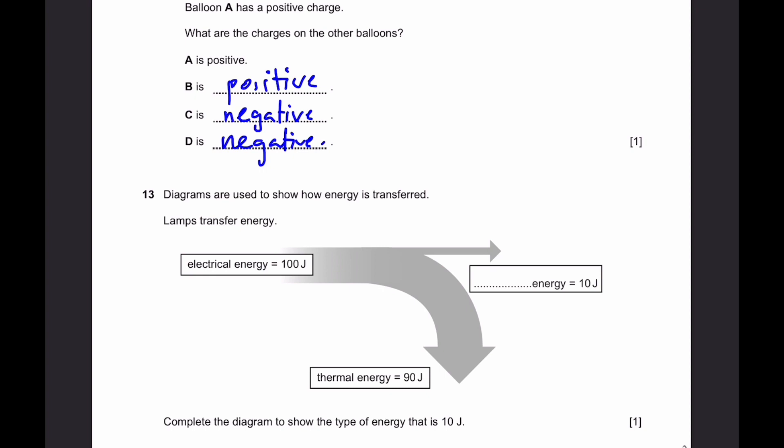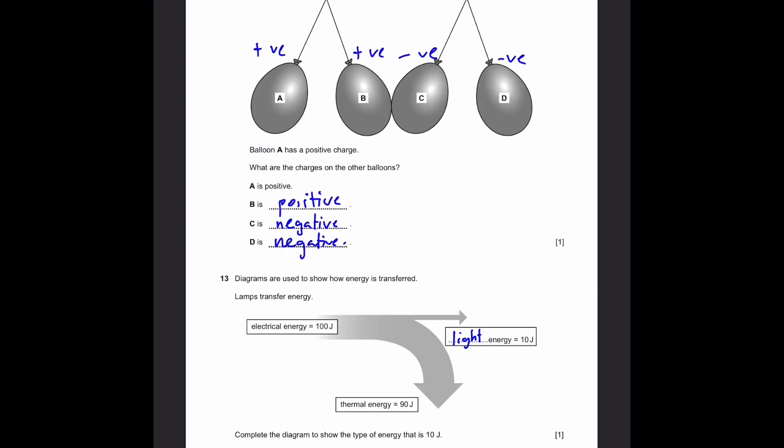Question 13. Diagrams are used to show how energy is transferred. Lamps transfer energy. Complete the diagram to show the type of energy that is 10 joules. Let's see what kind of energy lamps transfer. It starts with electrical energy, 100 joules. Then, some kind of energy is 10 joules. And wasted energy, that's why it is down towards the bottom. That's thermal energy, 90 joules. How do we know it's wasted? Because it's going downwards. So, what useful energy is produced by a lamp? Light, right? So, light energy. That's all.